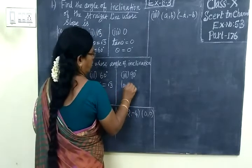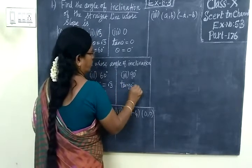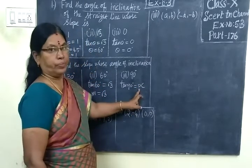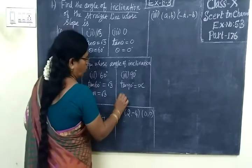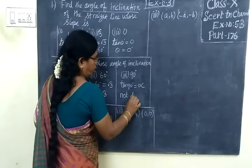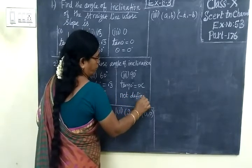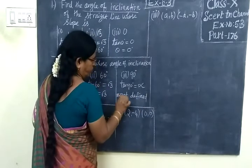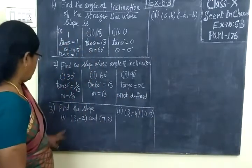Next, tan 90° is not defined, undefined. So slope cannot be defined. M cannot be defined.